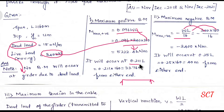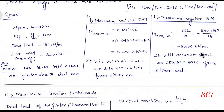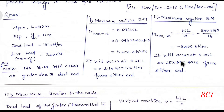For a simply supported girder, the position of maximum positive bending moment is at 0.211 × L. With L = 160, that gives 33.76 m from each support. For maximum negative bending moment, we calculate −3400 kN·m using the formula −WL/16.